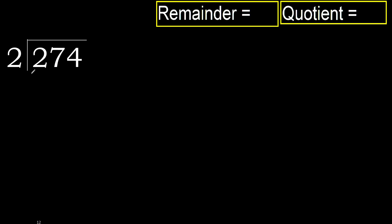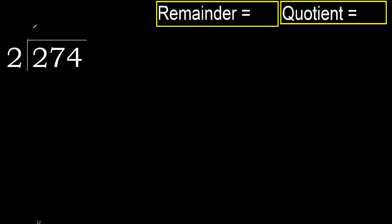274 divided by 2. 2 is not less, therefore start with 2. 2 multiplied by which number is nearest to 2 but not greater? 2 multiplied by 2 is 4, which is greater. 2 multiplied by 1 is 2, which is not greater. Ok, subtract. Next, eliminate 0 on this side.